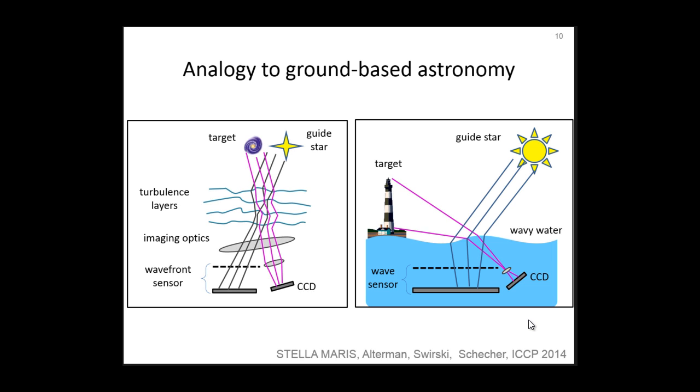The analogy of the problem points to our solution. The water surface can be estimated by measuring a known guide star through the water surface simultaneously with viewing the scene of interest. Our stellar guide is obvious, the Sun. From deviations of the resulting Sun imagelets, the instantaneous refractive water surface is spatially sampled and estimated. This enables significant reduction of distortion using physics-based geometric computations per frame.